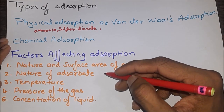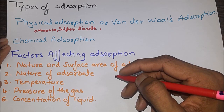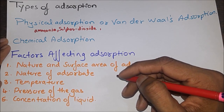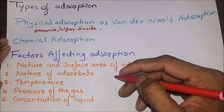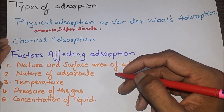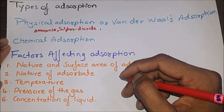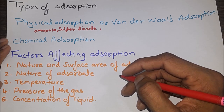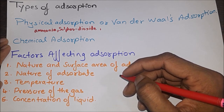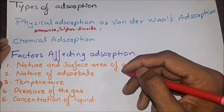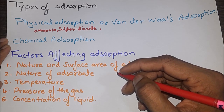Second, the nature of adsorbate — applicable for gaseous adsorbates. The amount of gas adsorbed depends upon the nature of the gas. Gases that are easily liquefied and highly soluble in water get adsorbed to a greater extent than gases which are less soluble and cannot be liquefied easily. Gases like sulfur dioxide, ammonia, and carbon dioxide, which are liquefied more easily, are adsorbed more readily than permanent gases like H₂, N₂, and O₂ which do not liquefy easily.